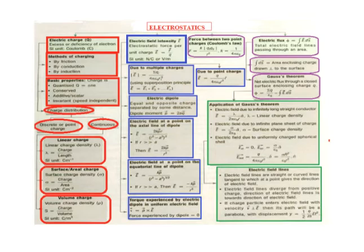Next: electric field intensity, denoted by the vector E. It is the electrostatic force per unit charge. E vector equals F vector divided by Q. The SI unit of force is Newton, so the unit is N/C or V/m. Electric field intensity due to a point charge: E vector equals Q divided by 4 pi epsilon naught r squared, times the unit vector r-hat.